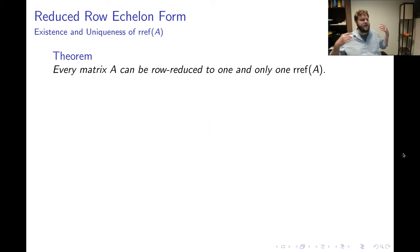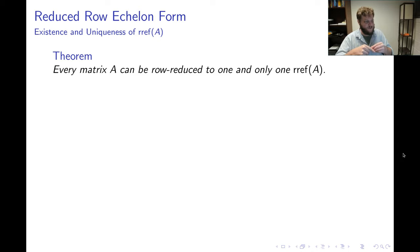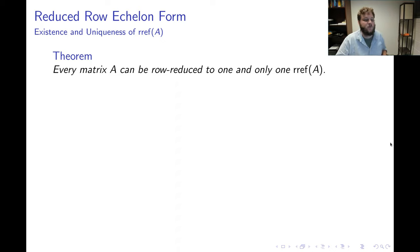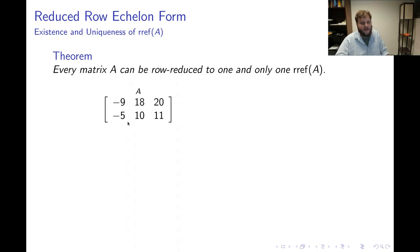The key point is that if you start with any matrix, you can always do elementary row operations until you reach a reduced row echelon form. And there is one and only one reduced row echelon form that you'll produce. Here's an example illustrating this theorem: I have a 2×3 matrix A, and I want to use elementary row operations to produce its reduced row echelon form.